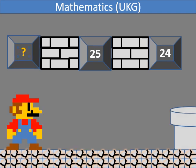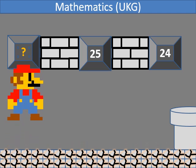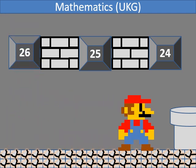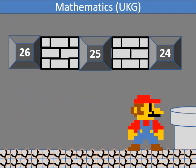In backward counting, which number comes before 24? It's 25.